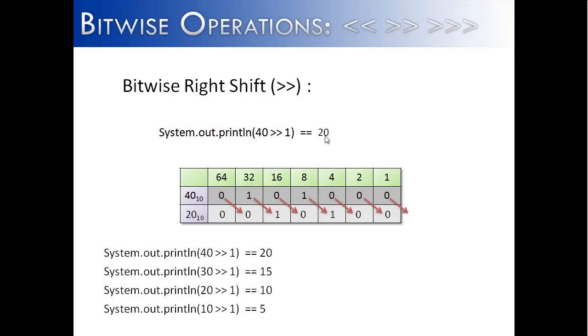Hopefully you can see, as a left shift is multiplying by two, a right shift is really dividing by two. So 40 divided by two is 20, 30 divided by two is 15, 10 divided by two is 5. So a right shift by one is equivalent to division by two.